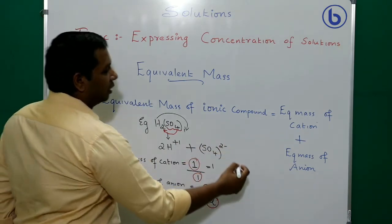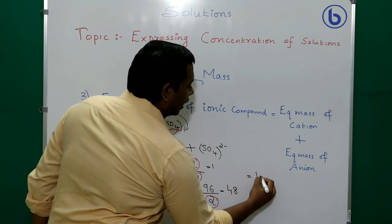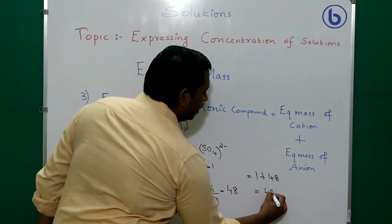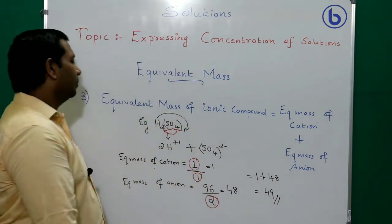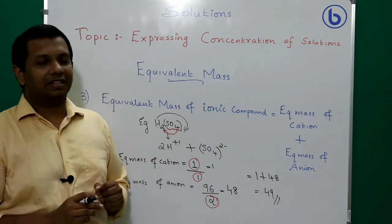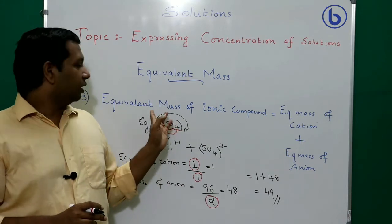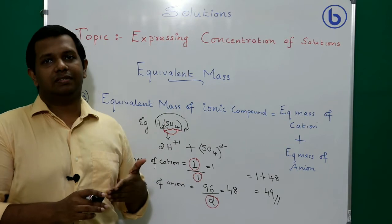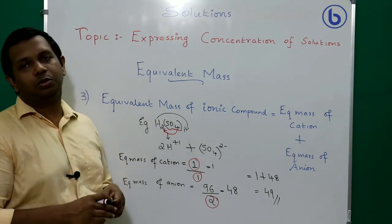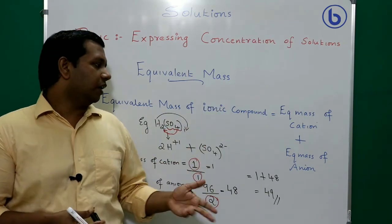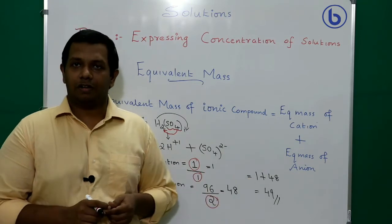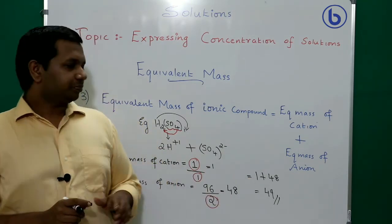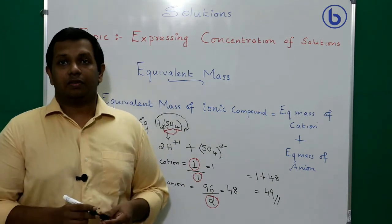Adding both values: 1 + 48 = 49. This matches our earlier calculation where equivalent mass of H₂SO₄ = molecular weight 98 ÷ basicity 2 = 49. So either method gives the same result.